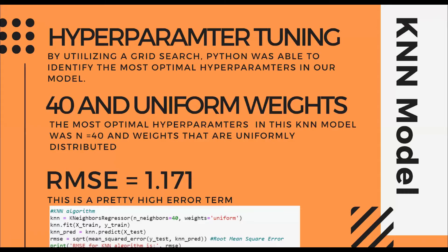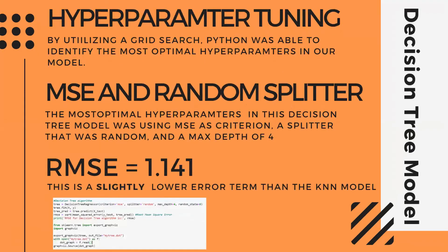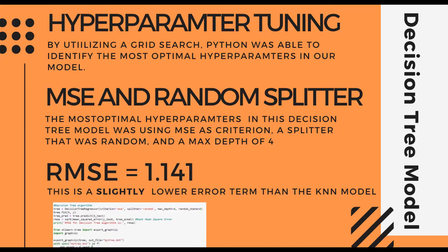For our modeling, we chose to use a k-nearest neighbors regressor and a decision tree regressor. For the KNN algorithm, we started by using a grid search to identify optimal hyperparameters, which turned out to be a k value of 40 and a uniform weighting of points in each neighborhood. We fit the model on a training set and made predictions on a test set. The root mean square error was about 1.17, which is fairly high, indicating this model might not have been the best fit. The same process was repeated for the decision tree algorithm, where the optimal hyperparameters were using MSE to measure quality of splits and a max tree depth of 4. The RMSE for the decision tree was about 1.14, slightly lower than for the KNN algorithm.